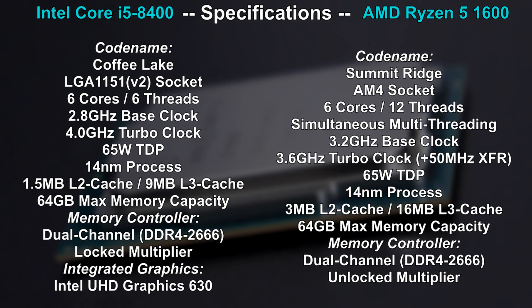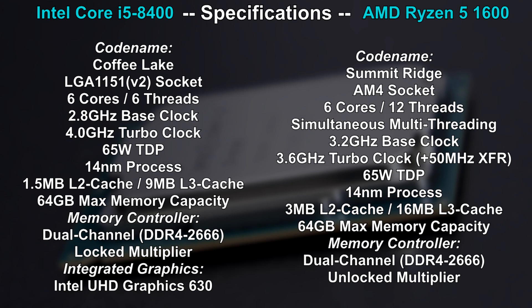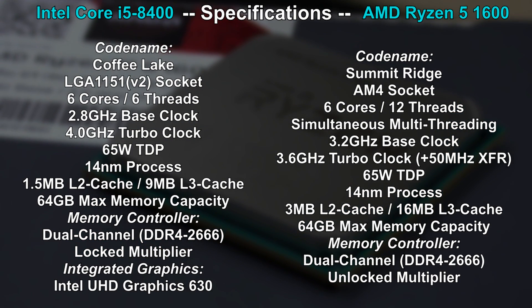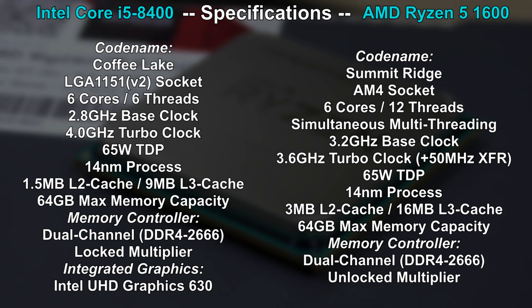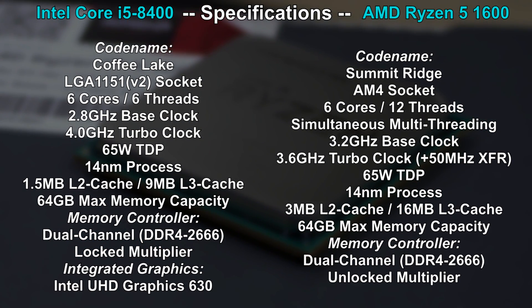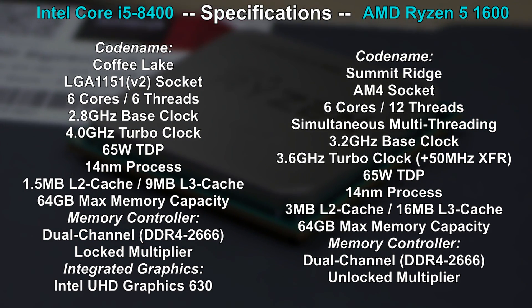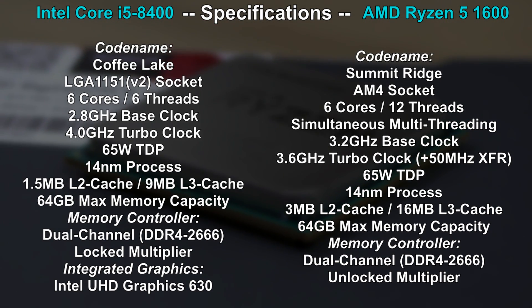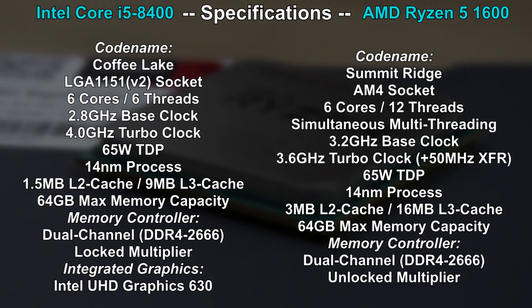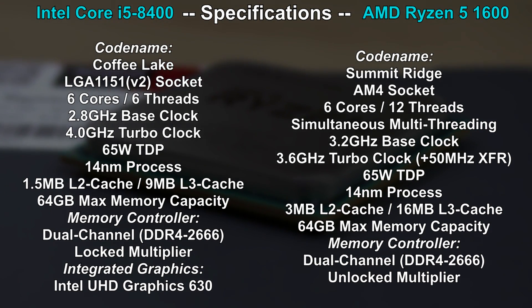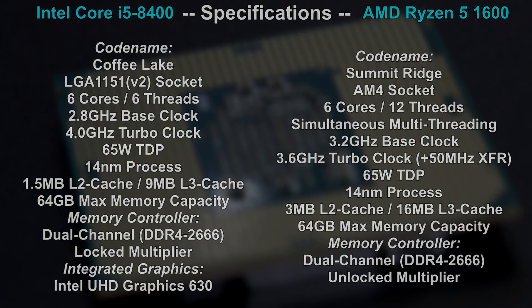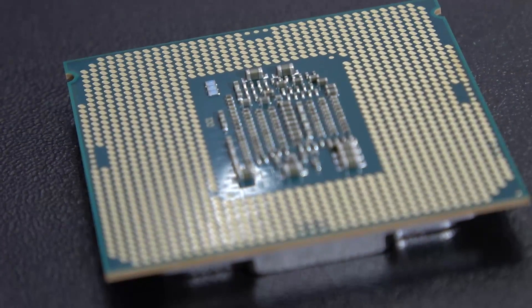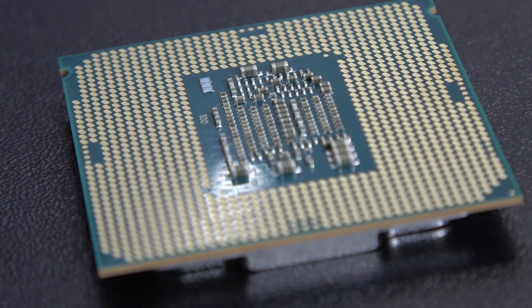As for the main specs, both CPUs are 6 cores, the Ryzen coming with 12 threads though. The i5 comes with higher clock speeds, the Ryzen 1600 with more cache, but no integrated graphics unit. Now that's all great, but let's roll the benchmarks.